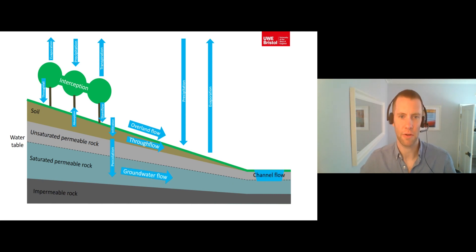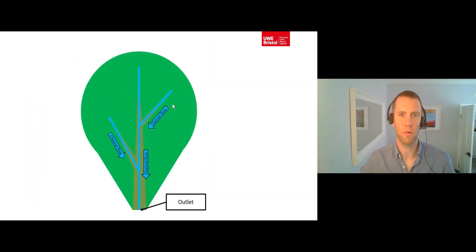Once water has moved downhill slopes as either overland flow, through flow or groundwater flow, it makes its way into a river channel and begins to move downstream as channel flow. The channel flow from all of the branches within the catchment network join together to contribute to the flow that reaches the drainage basin outlet.